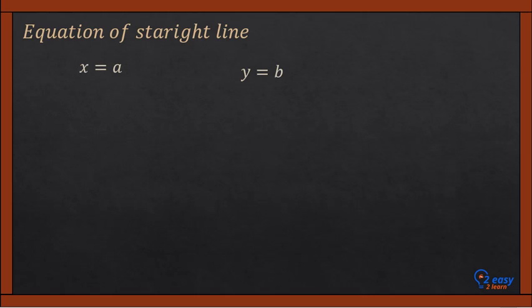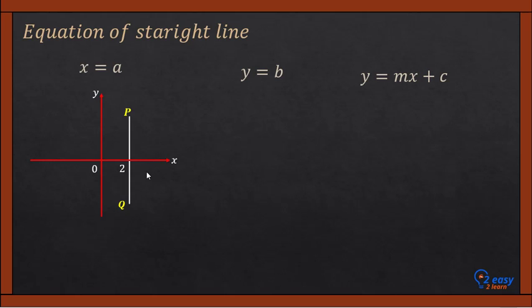There are three types of straight lines: x equals a, y equals b, and y equals mx plus c. Let's discuss one by one. If you look at this line, PQ is a vertical line which is parallel to the y-axis and passes through the x-axis at 2. So its equation is x equals 2.